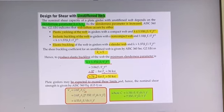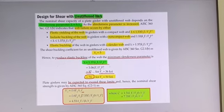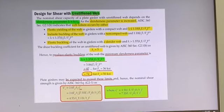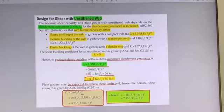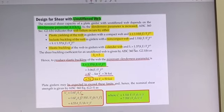The minimum slenderness parameter to produce elastic buckling is lambda = 1.3 sqrt(kv*E/fy). And if you substitute all these values, you can get 74. That's the minimum slenderness parameter to produce elastic buckling.